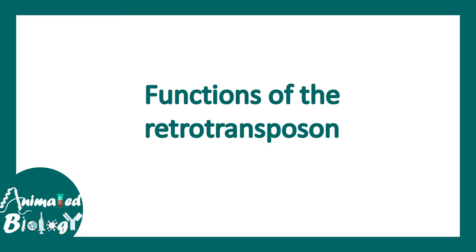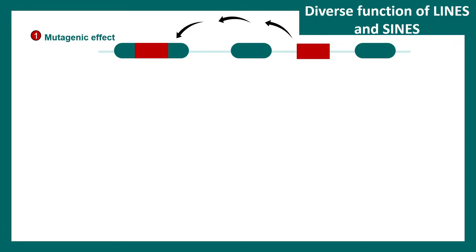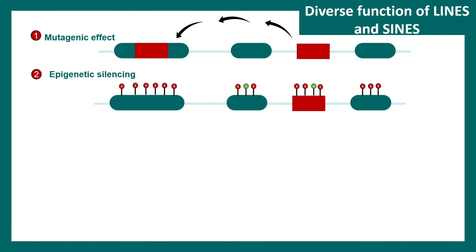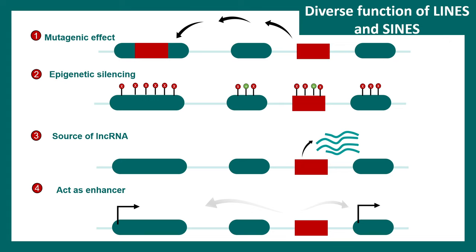Now let's talk about the functions of retrotransposons. Just like any other transposons, retrotransposons can have several effects on the genome. First, they may have a mutagenic effect — jumping into the middle of an exon can disrupt the coding frame. They can also lead to epigenetic silencing, serve as a source of long non-coding RNA, and act as enhancers to regulate transcription. So retrotransposons have many important genomic functions.